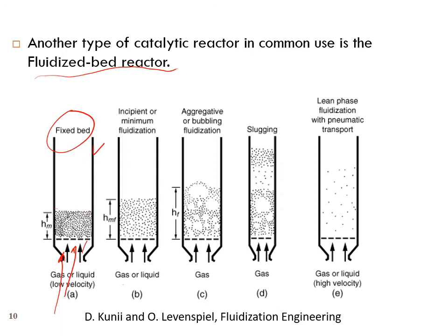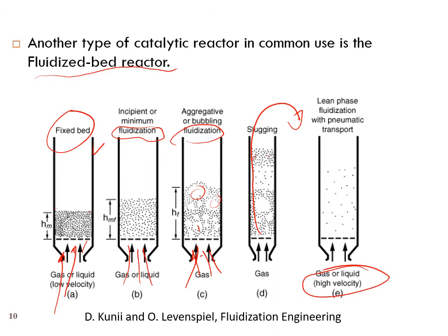But if there is no plate to hold the catalyst in place and the flow is fast enough, it creates movement of the bed — that's a fluidized bed. If you increase the flow you can get better mixing. However, if the flow is too fast you get slugging — some zones with little catalyst and others with a lot — which is bad for reactor performance.